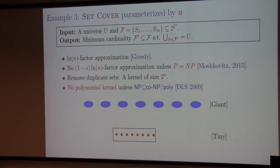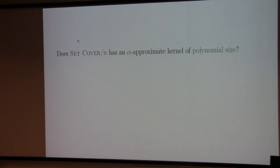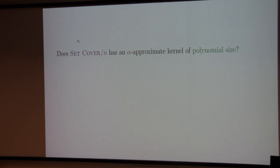Set cover parameterized by N does not have a polynomial kernel unless NP ⊆ co-NP/poly, as proved by Dom, Daniel, and Saket. The instance has a small universe U and a large collection of sets. The question we ask is: if we are willing to lose a constant factor (say 10), can we reduce the large family to polynomial in N many sets? This is the question. For any constant alpha, does set cover parameterized by N have an alpha-approximate kernel? What we prove is that it cannot, using cross-composition.